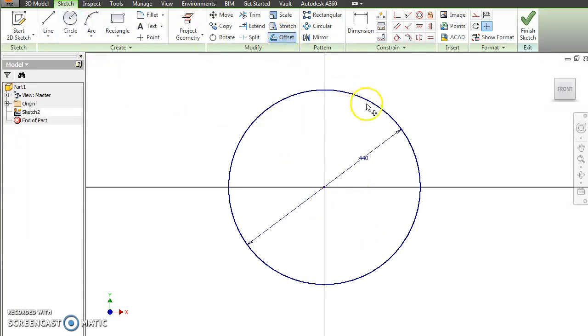From there, we're going to offset. We're going to offset inwards, .05. And that went the wrong way. Offset, .05. There we go.